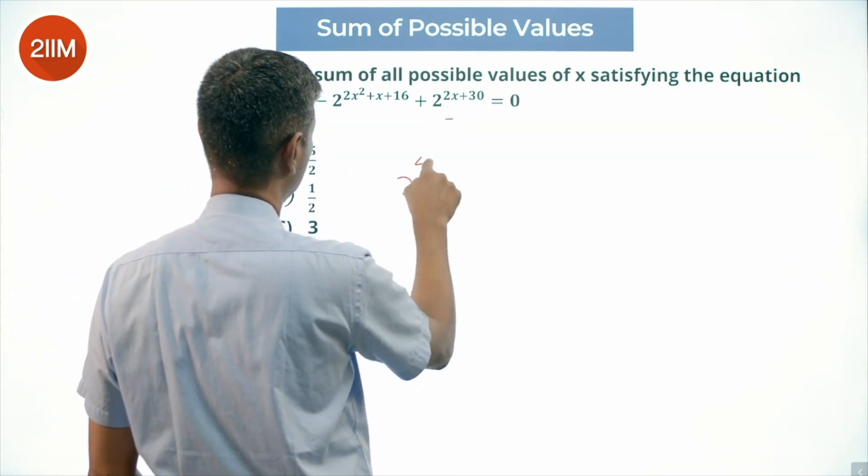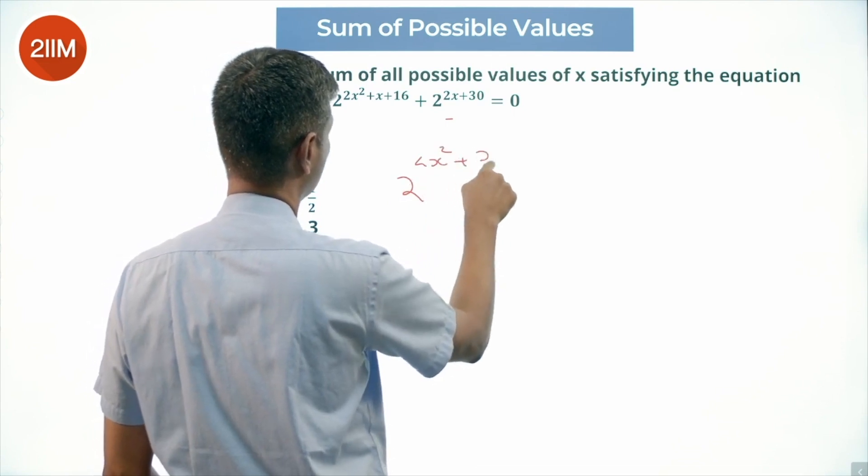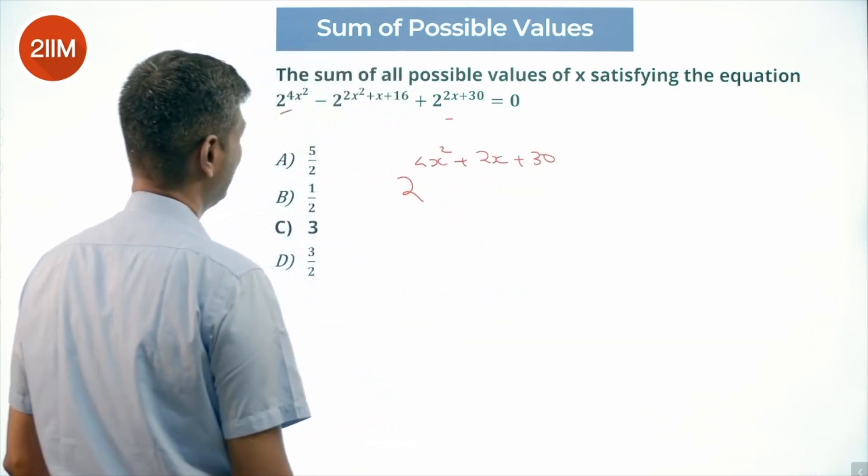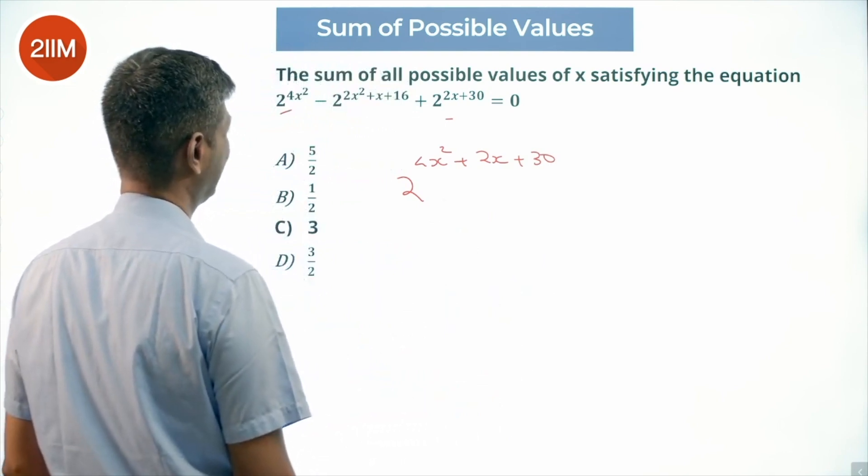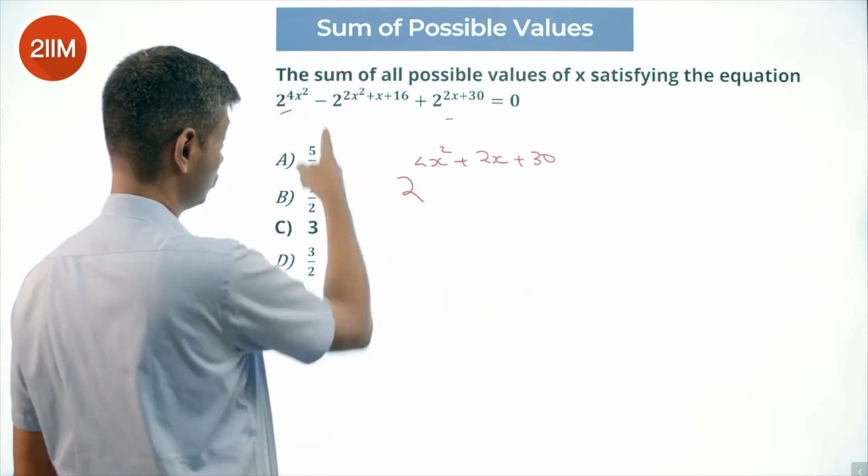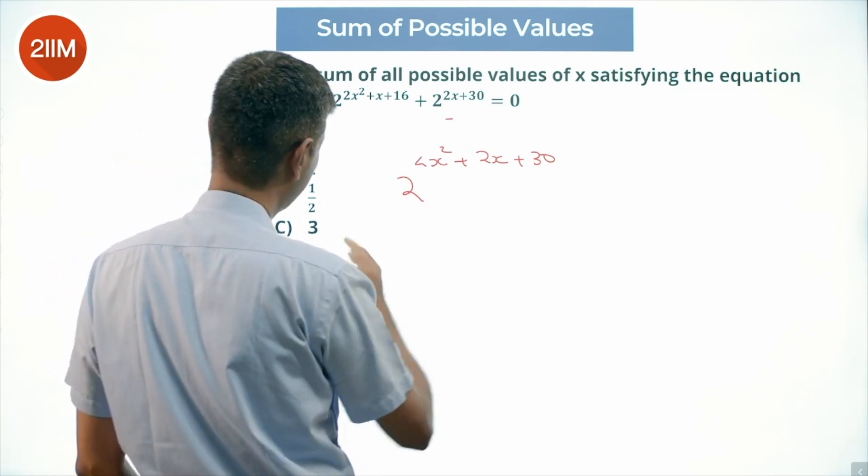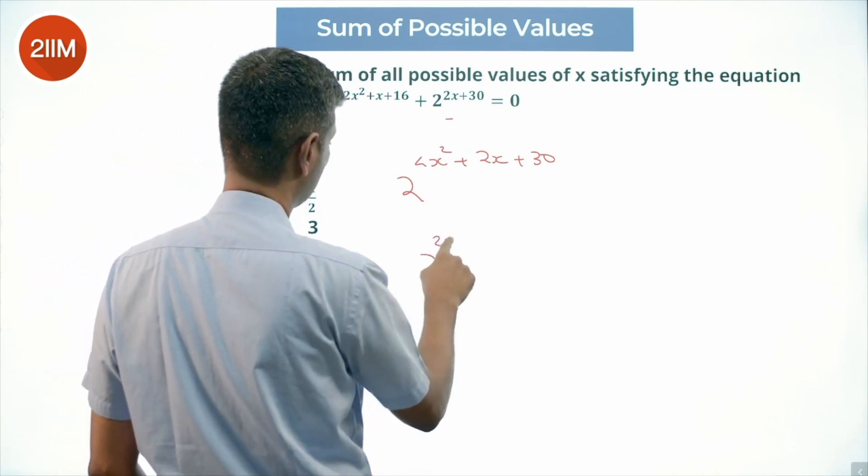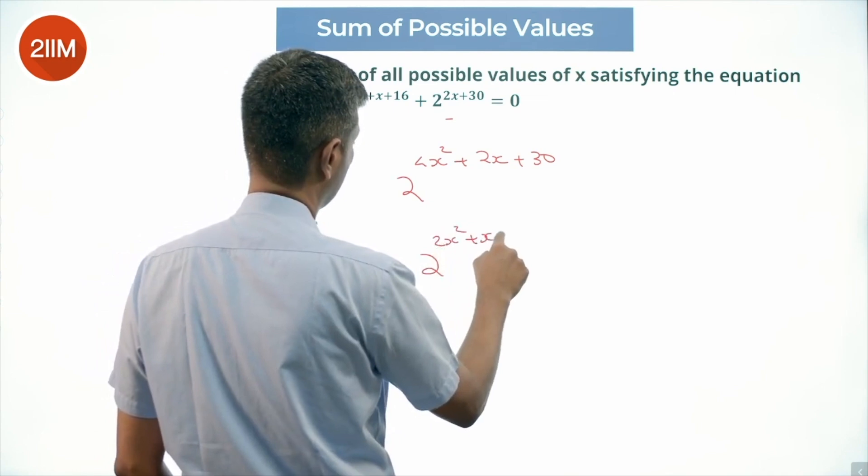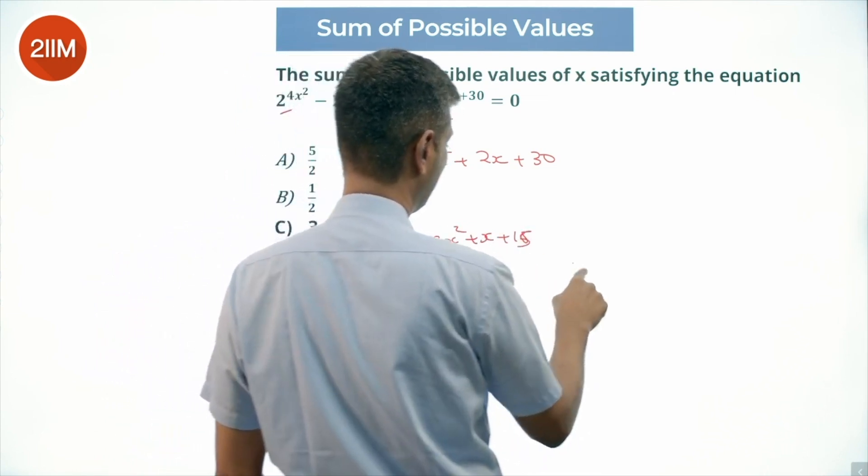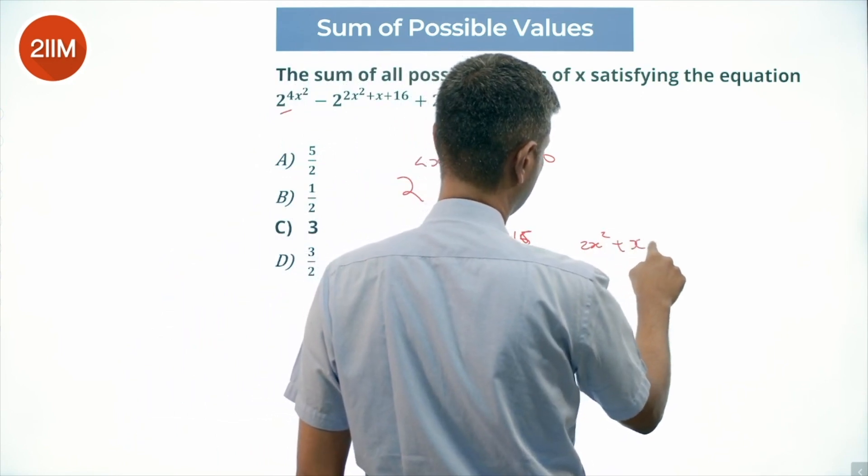So 2 par 4x square plus 2x plus 30 is the product of these two and then 2x square plus x plus 16. This is 2x square plus x plus 16. So I can break this as 2 par 2x square plus x plus 15 and then 2 par 2x square plus x plus 15.